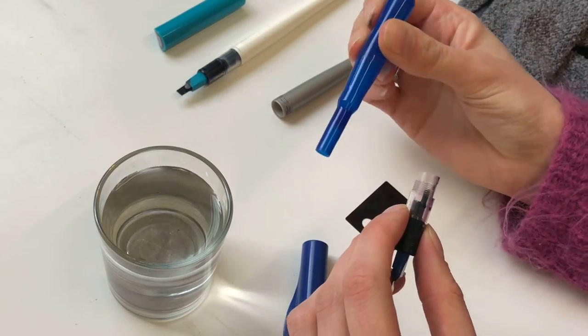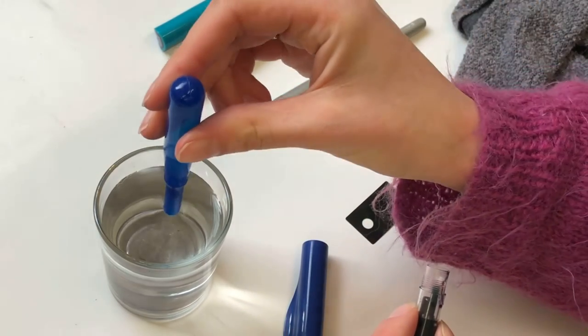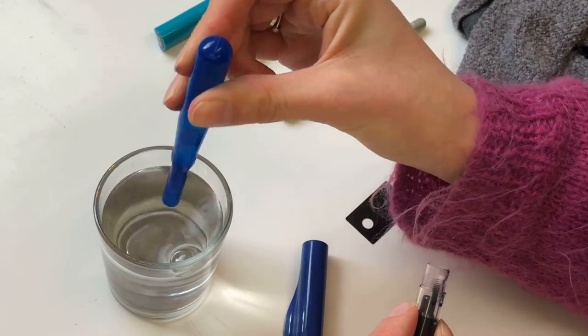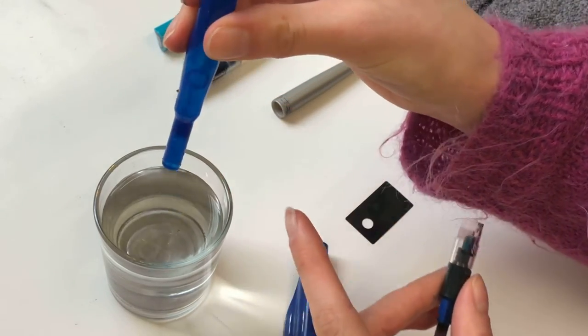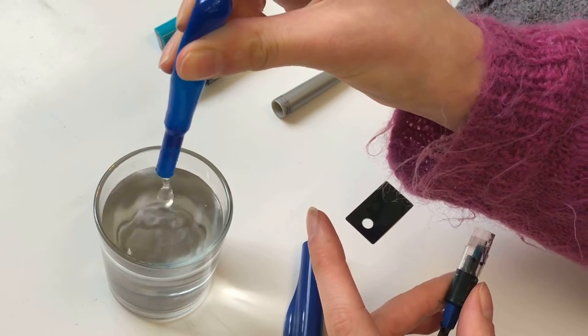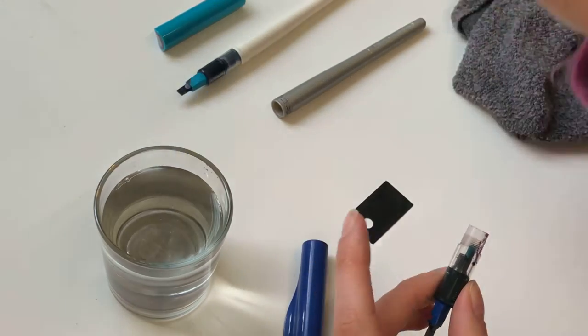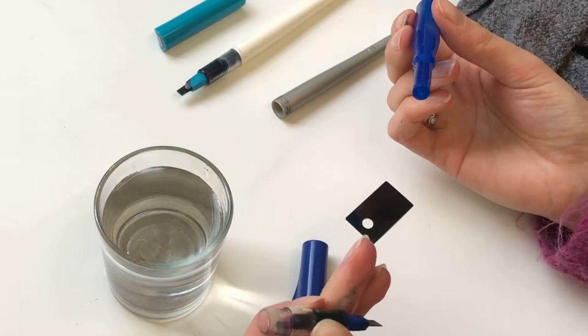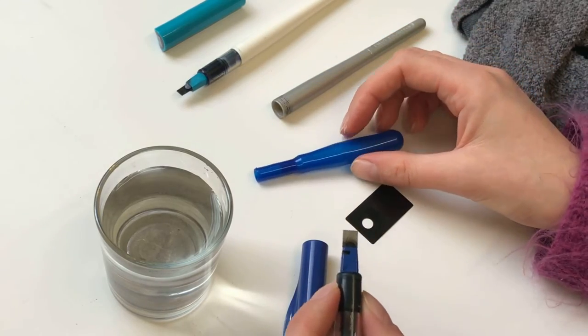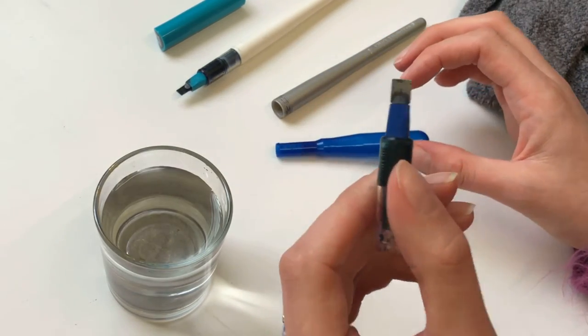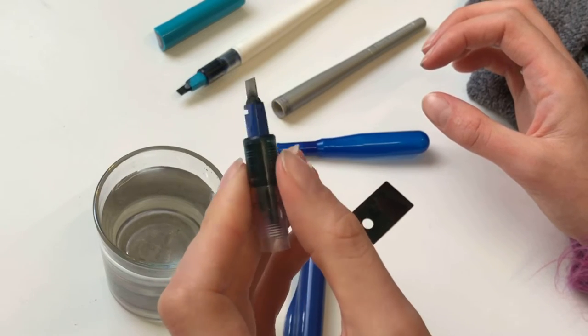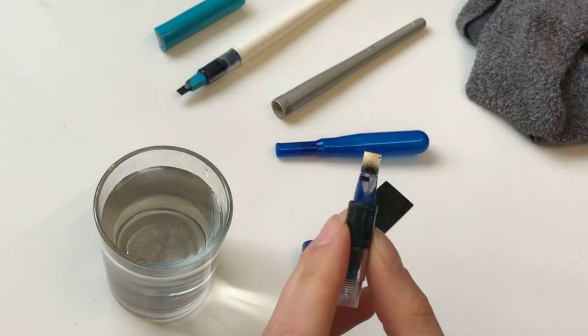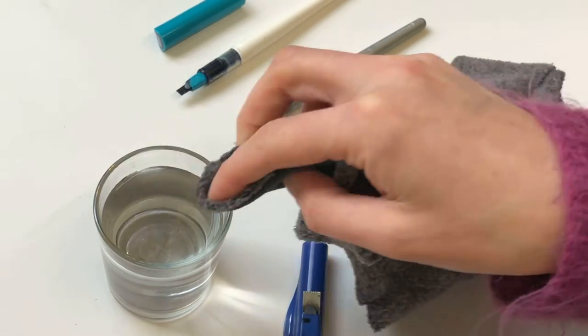In your Pilot pen packaging you should receive this pipette. For example, if you dip it into water and squeeze it, it sucks up a lot of water which you can then squeeze back out. Before I start pushing the water through the nib, you can see it's quite dirty.